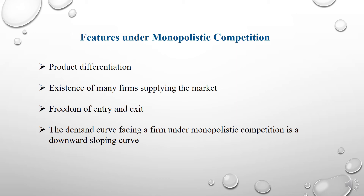The second feature is the existence of many firms supplying the market. Under monopolistic competition, there is a fairly large number of sellers — let's say 25 to 70. Each individual firm has a relatively small part of the total market, so that each has very limited control over the price of the product. Each firm determines its own price-output policy without considering the reaction of rival firms.